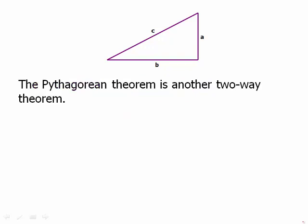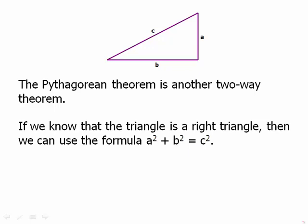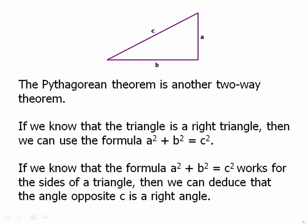Notice also this is a two-way theorem. If we know the triangle is a right triangle, then we can use the formula a² + b² = c². If we know the formula a² + b² = c² works with the sides of a triangle, then we can deduce that the angle opposite c is a right angle. We can use this either way.